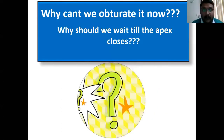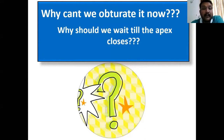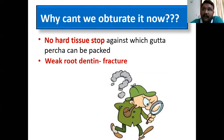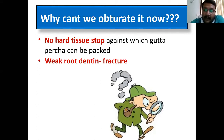Can you obturate a tooth with an open apex? For proper obturation, an apical stop must be present. In the case of an open apex, there is no hard tissue stop against which gutta-percha can be condensed. If you try to obturate with an open apex, first the gutta-percha won't be stopped, and second, the entire gutta-percha will be extruded into the tissue, causing further infection.